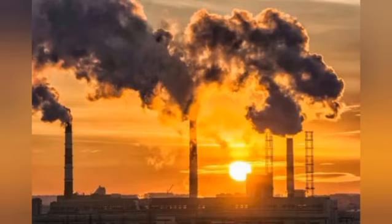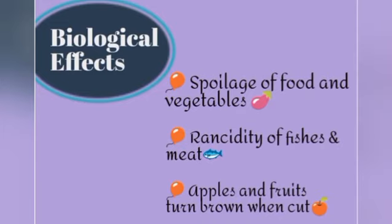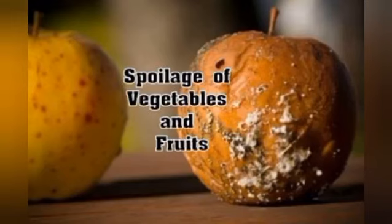When chemical reactions take place there will be production of heat, light, sound, pressure, and many other effects. The first one is a biological effect. In this we are going to see about spoilage of food and vegetables, rancidity of fishes and meat, and apples and fruits turning brown when cut. Food spoilage may be defined as any change that causes food unfit for human consumption. The chemical reaction catalysed by enzymes results in the degradation of food quality.